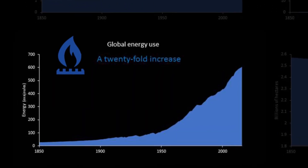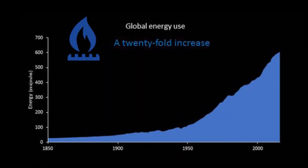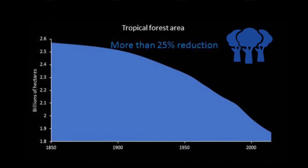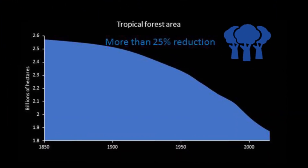Much of that transformation has been driven by industrialisation, powered primarily through the use of fossil fuels — coal, oil, gas. Indeed, globally, energy use from both domestic and industrial uses has also increased dramatically, about 20-fold. And we've also been changing our land surface; if we look at the area covered by tropical forests, it's decreased dramatically as we've been chopping down trees for settlements and for farming.